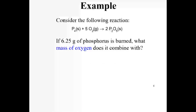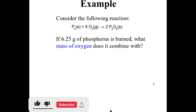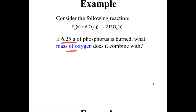Let us see this example. Consider the following reaction: if 6.25 grams of phosphorus is burned, what mass of oxygen does it combine with?